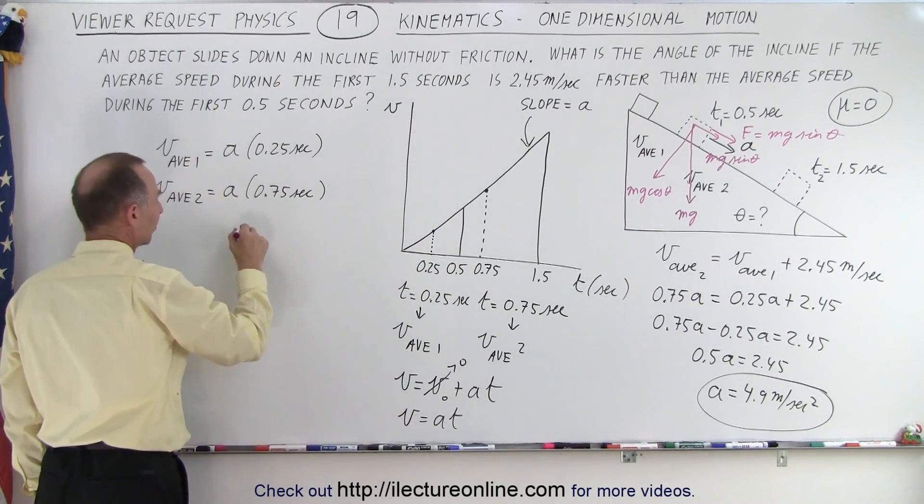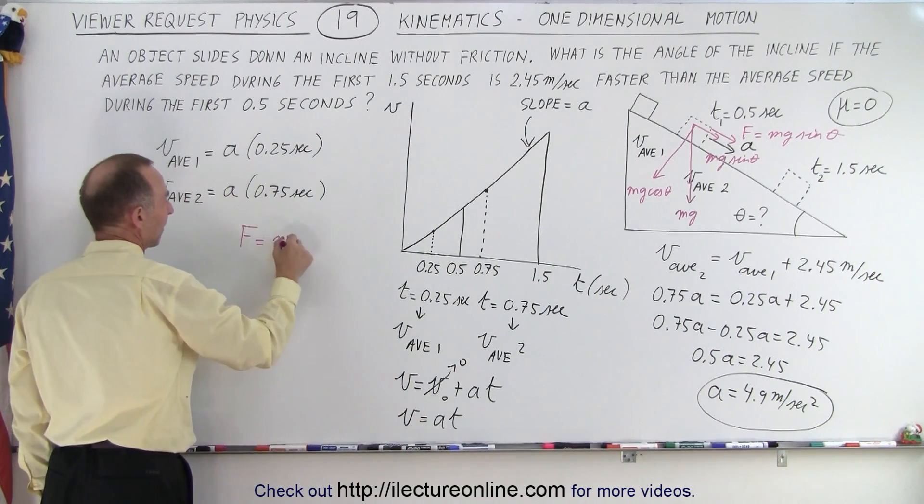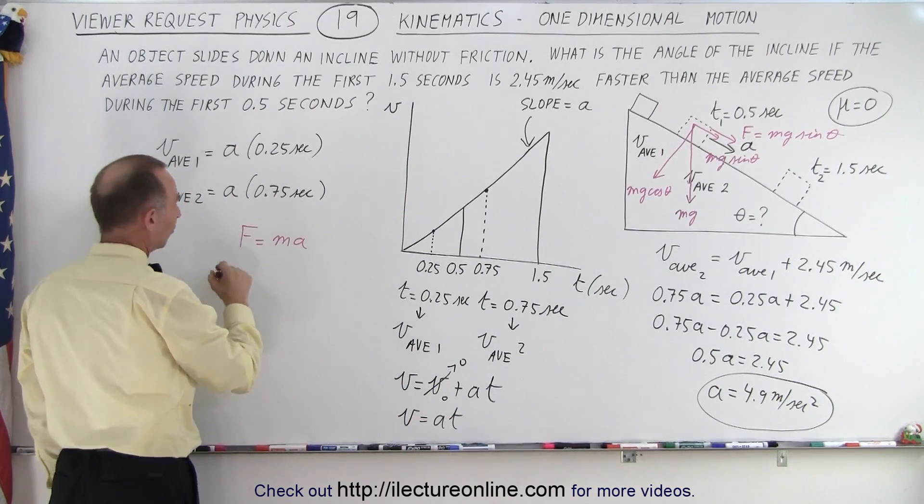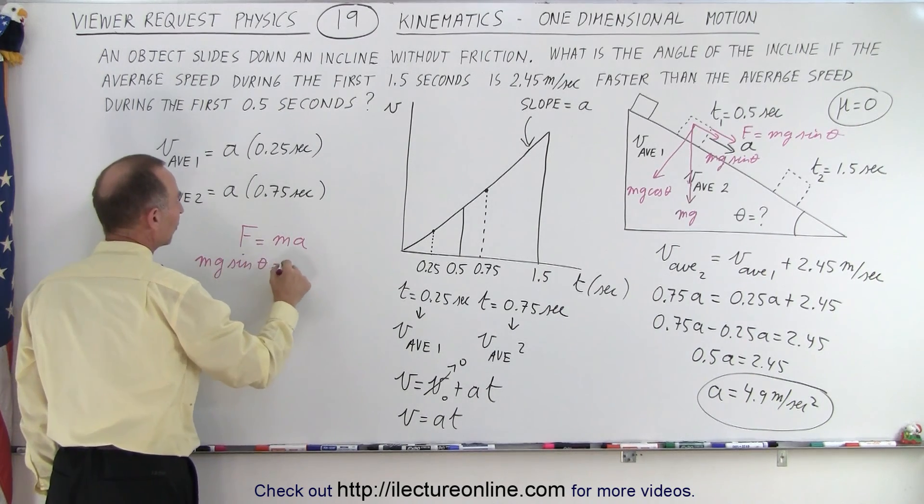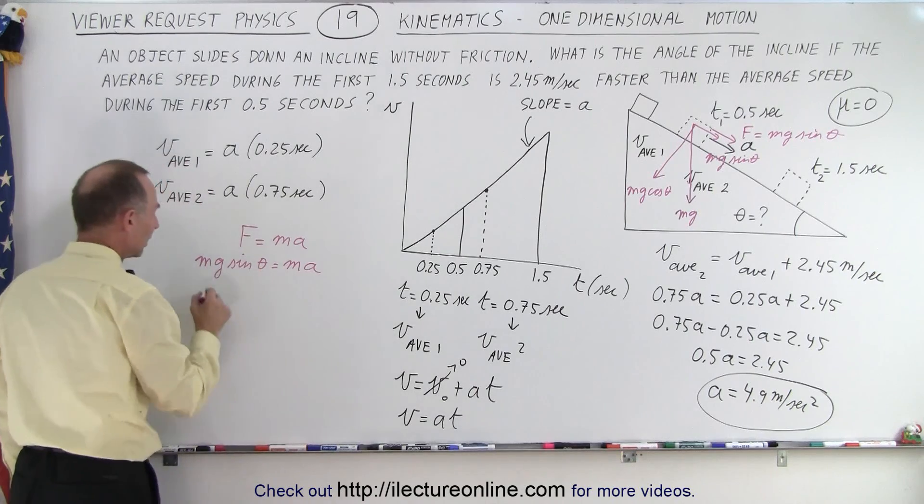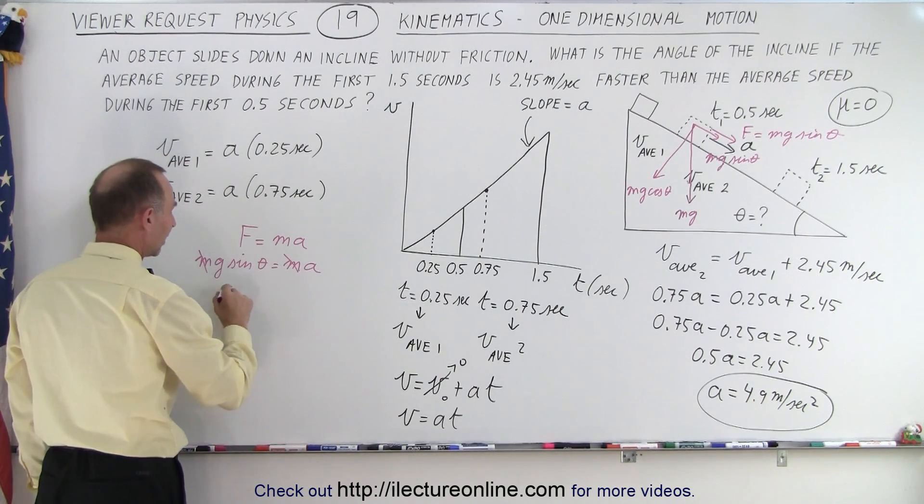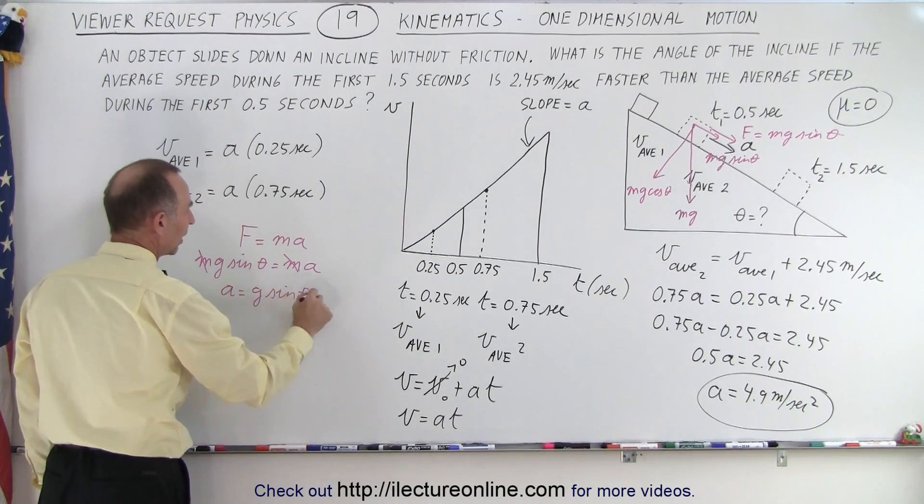And then, of course, we can say that f equals ma. In this case, the force is mg sine theta, which is equal to ma. We can get rid of m's on both sides, which means that a is equal to g times the sine of theta.